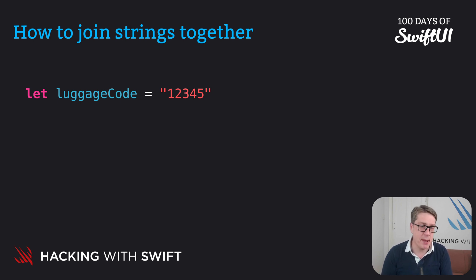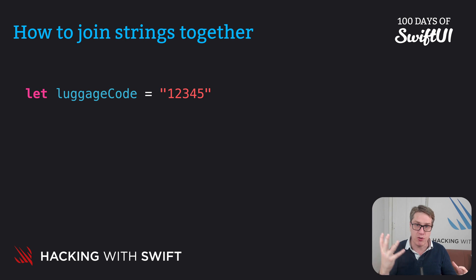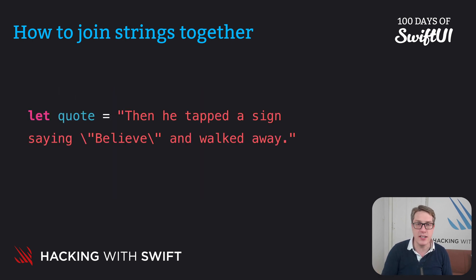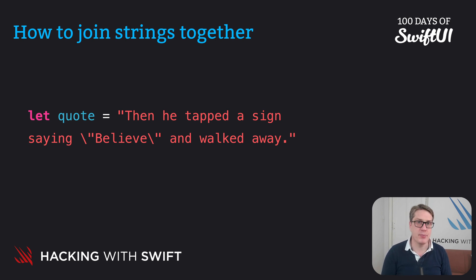Swift has a better solution called string interpolation. It lets you create strings from other strings, but also from integers, doubles, and more. If you remember, earlier I said you could include quotes inside strings as long as you have a backslash before the quote, so Swift knows to treat it specially. Something very similar happens with string interpolation: you place a backslash and then write your constant or variable name in parentheses, and it'll do the rest for you, inserting it directly in there.